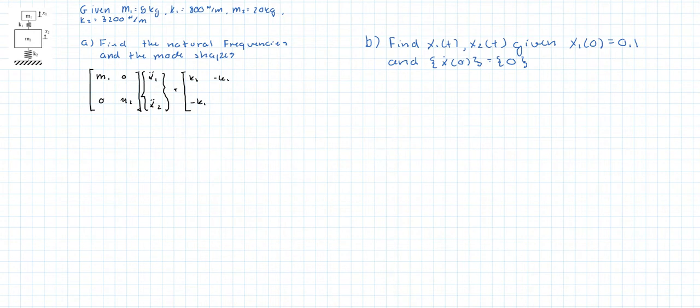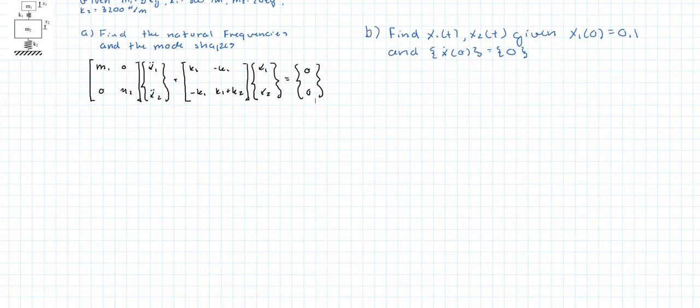Remember your off diagonal of this diagonal is always negative and it's symmetrical. Since there are no acting or outside forces, all of this is equal to the zero vector.